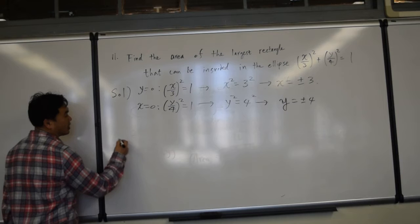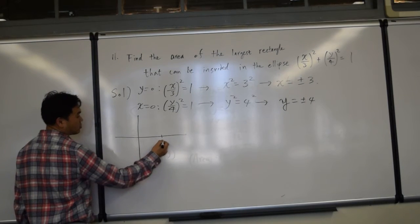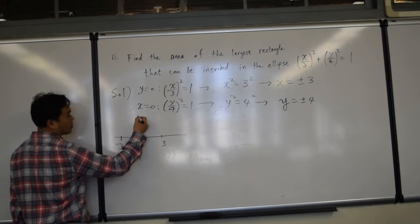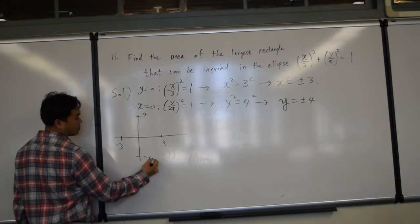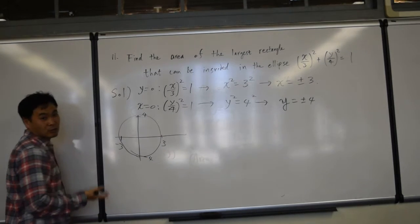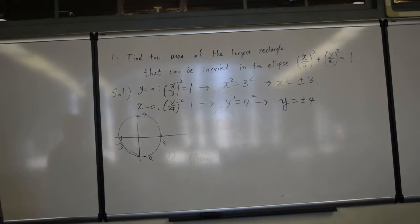Now what does that mean? That means the x-intercept is 3 and negative 3, and y-intercept is 4 and negative 4, so you get an ellipse like this one.